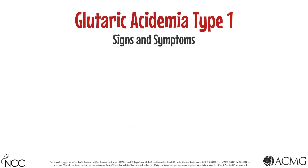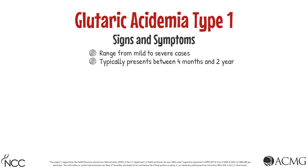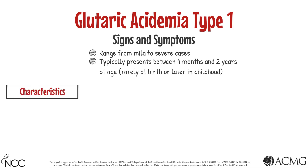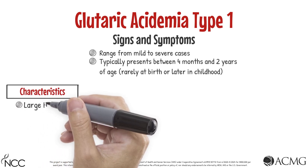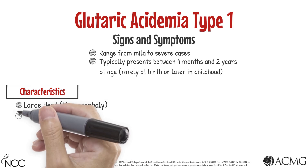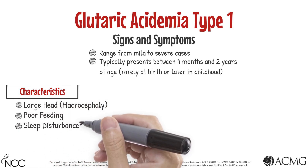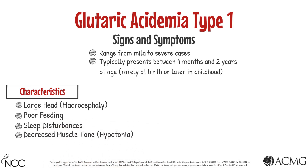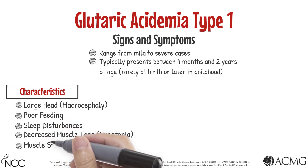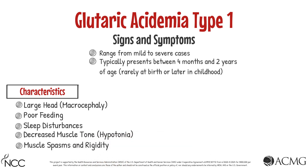Presentation of Glutaric Acidemia Type 1 can vary widely, ranging from mild to severe cases. This condition typically presents between four months and two years of age, though rarely it can present at birth or later in childhood. Typical signs and symptoms include an unusually large head or macrocephaly, poor feeding, sleep disturbances, decreased muscle tone or hypotonia, and muscle spasms and rigidity.